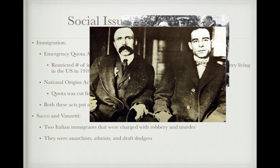Sacco and Vanzetti were two Italian immigrants charged with robbery and murder. They were also anarchists, atheists, and draft dodgers, representing a big fear in 1920s America. Their trial focused more on their beliefs than on actual evidence of whether they committed the crime. Historians largely agree they did not receive a fair trial, and they were both executed in 1927 in Massachusetts.